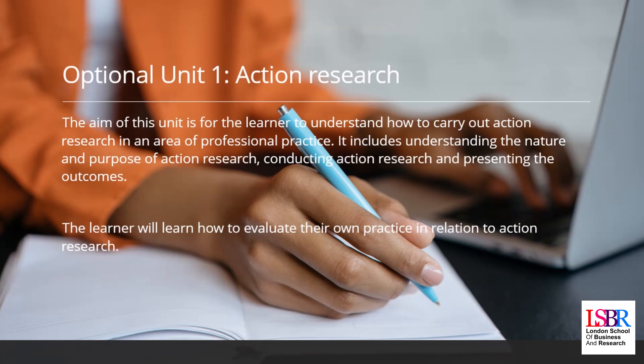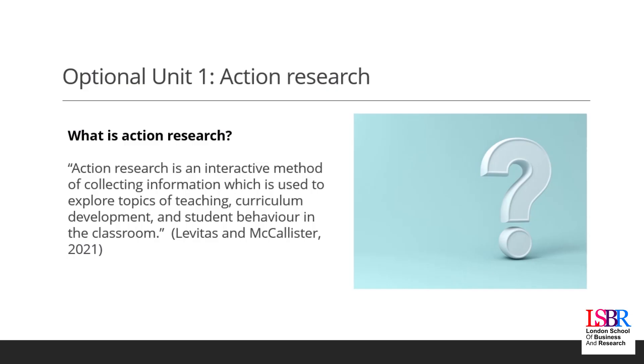Unit One: Action Research. The aim of this unit is to help you understand how to carry out action research in an area of professional practice. This unit will include understanding the nature and purpose of action research — what action research is, how to conduct it, and how to present the outcomes. You will also learn how to evaluate your own practice in relation to action research.